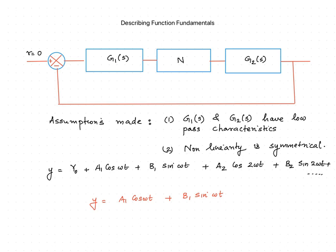Now let us move to the describing function fundamentals. In the figure, a non-linear closed-loop system is given, where capital N represents the non-linear element, and G1(s) and G2(s) represent the linear counterparts. We assume that the non-linear and linear elements can be totally separated, and the reference r is equal to 0. We make two assumptions: first, G1(s) and G2(s) have low-pass characteristics, which means they will block the higher harmonic components.